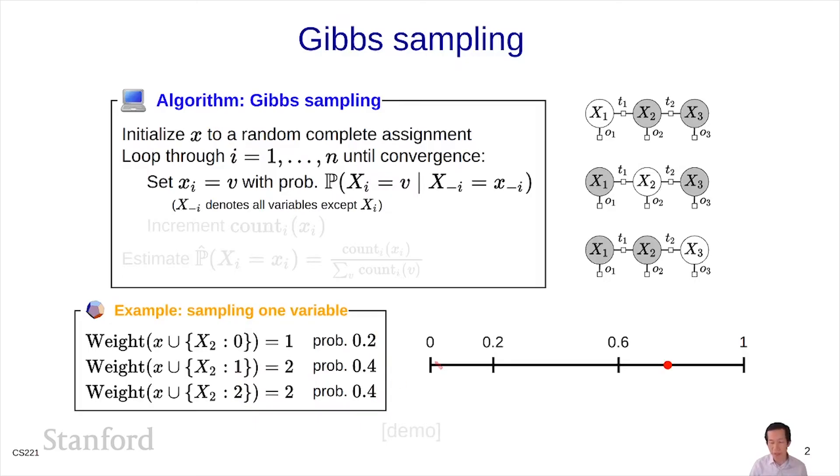You can visualize that sampling process by the interval from 0 to 1, where I have a number of segments representing the different possible values of x2, and the length is exactly the probability. Then I'm going to throw a one-dimensional dart at this line, hit it somewhere, and take whatever value is specified by that. Now I have a new value for x2 here, and now I proceed to the next variable and so on.